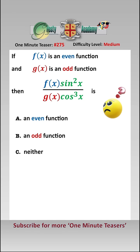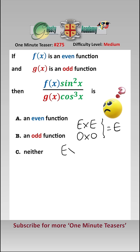To answer this, we need to remember a couple of facts about functions. An even function times an even function, or an odd function times an odd function, both equal an even function. An even function times an odd function equals an odd function.